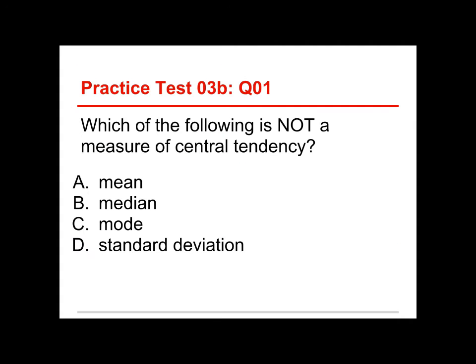The first question on this test is, which of the following is not a measure of Central Tendency? And the choices are the mean, the median, the mode, and the standard deviation. Well, of these four choices, it's the standard deviation, which is not a measure of Central Tendency. It's actually a measure of variation. We'll talk about it in Chapter 4.